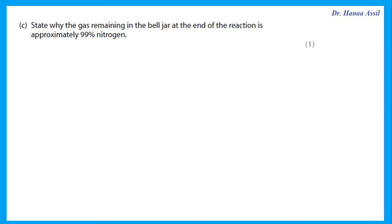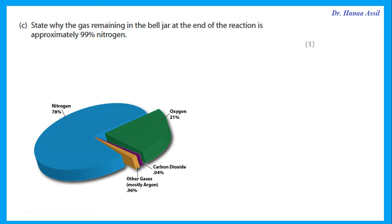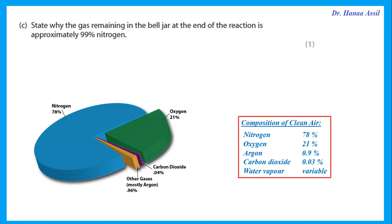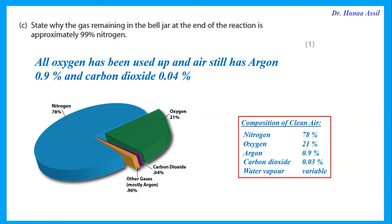State why the gas remaining is approximately 99% nitrogen and not 100%. This is because air is not only made of nitrogen and oxygen. Even after all the oxygen is used up, we still have approximately 0.9% argon and about 0.04% carbon dioxide remaining.